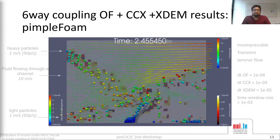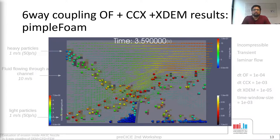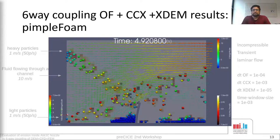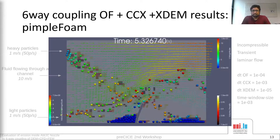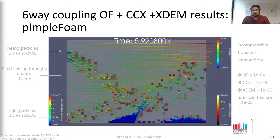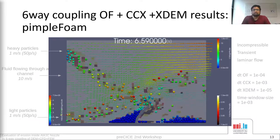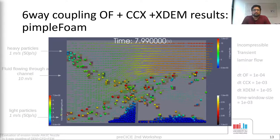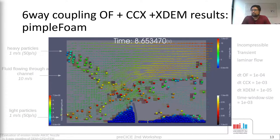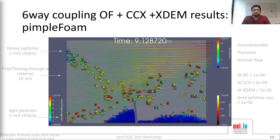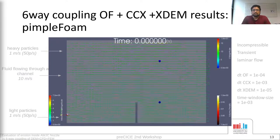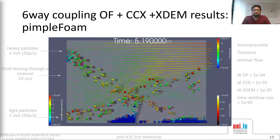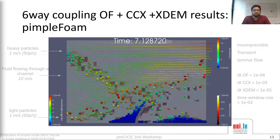Like in the 2-way case, the flap deforms due to the fluid flow as well as due to the particles. As expected, the heavy particles fall due to gravity and light particles float up due to buoyancy. We can also see that the particles are pushed in the direction of the flow. Since this is an incompressible single-phase fluid flow, we don't really use the new implementations.